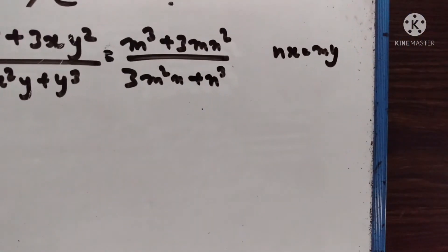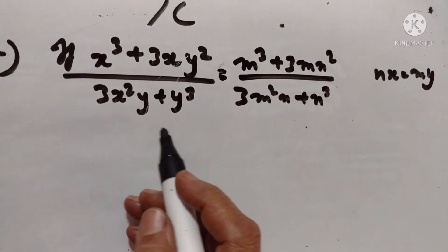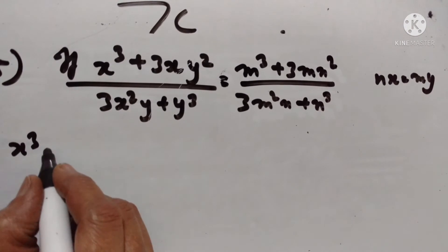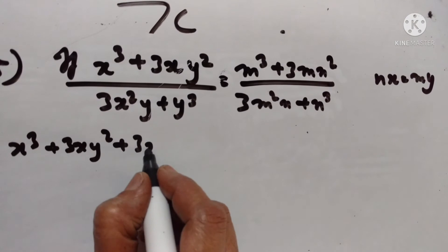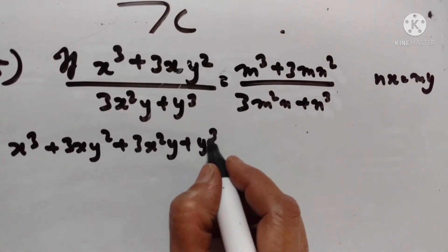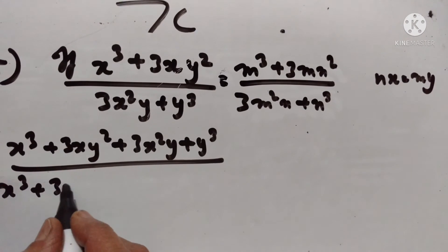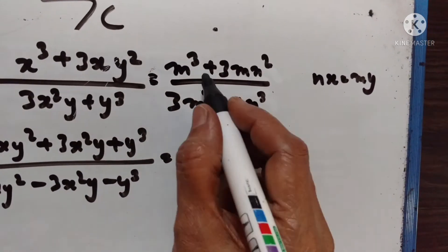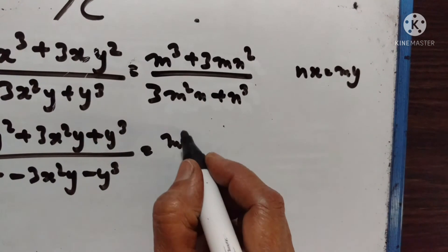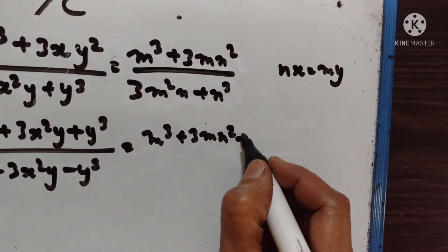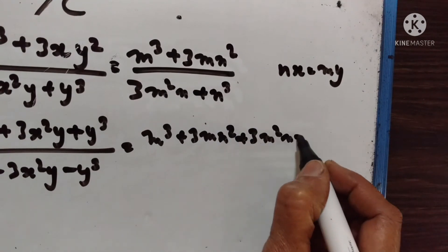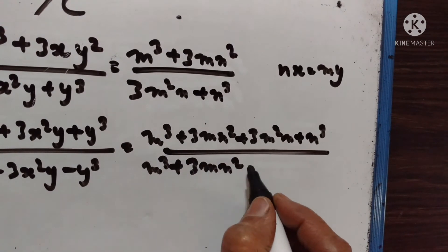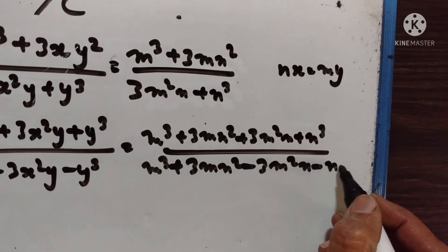15th problem. We have to prove that nx is equal to my. Applying componendo dividendo: this plus this upon this minus this. So x cubed plus 3xy squared plus 3x squared y plus y cubed upon x cubed plus 3xy squared minus 3x squared y minus y cubed is equal to m cubed plus 3mn squared plus 3m squared n plus n cubed upon m cubed plus 3mn squared minus 3m squared n minus n cubed.